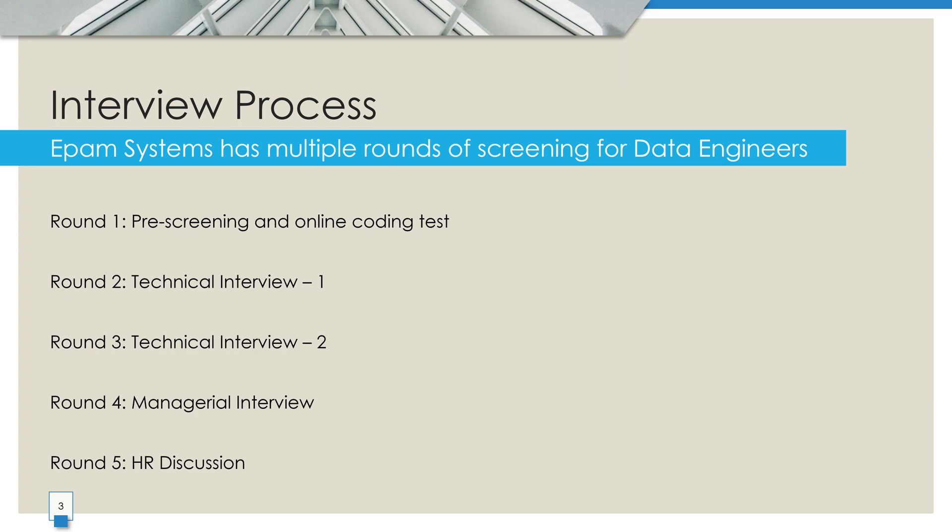Now let's move on to technical round one. This round usually lasts about 1.5 hours and is conducted by one of EPAM's developers. Your coding, technical, and communication skills will be evaluated in detail. Keep in mind that if you fail to answer the must-have skills questions, if your coding skills are very weak, or if the interviewer suspects cheating, the interview may be wrapped up much sooner than 1.5 hours. If you clear this round, you will proceed to technical round two. The format and difficulty are the same — think of it as a continuation where interviewers dive deeper into your skills.